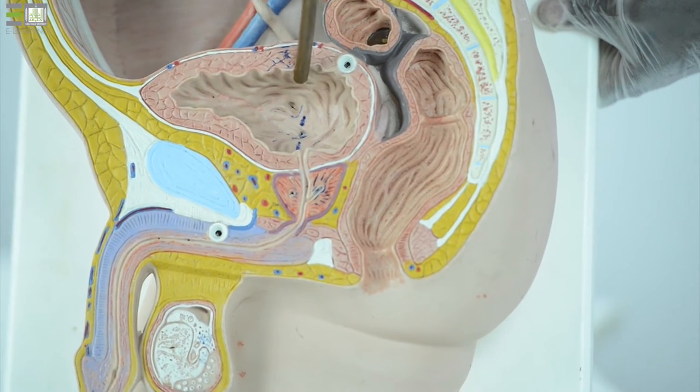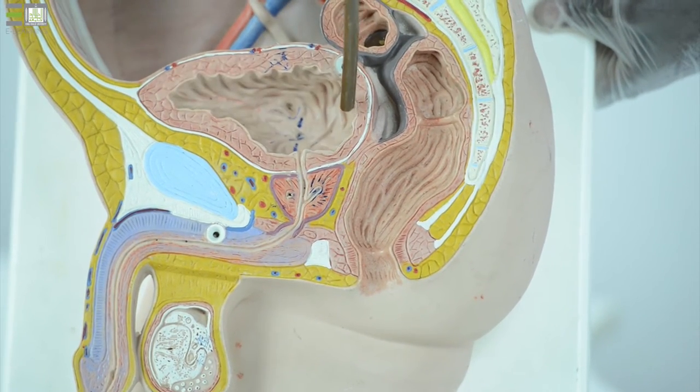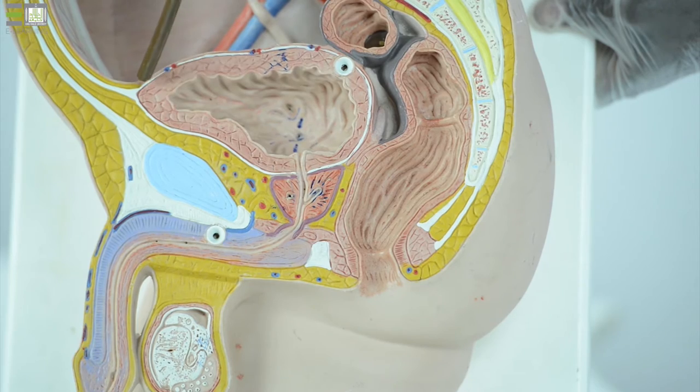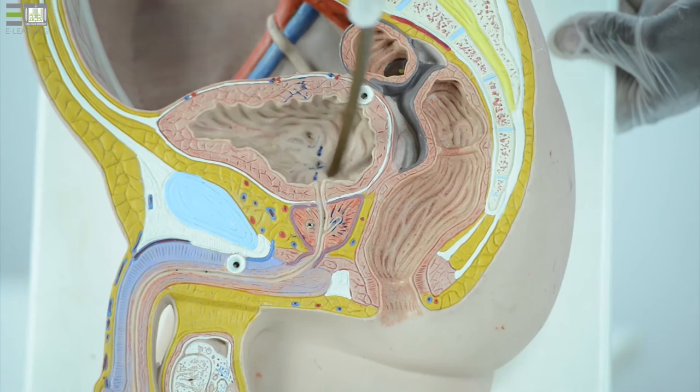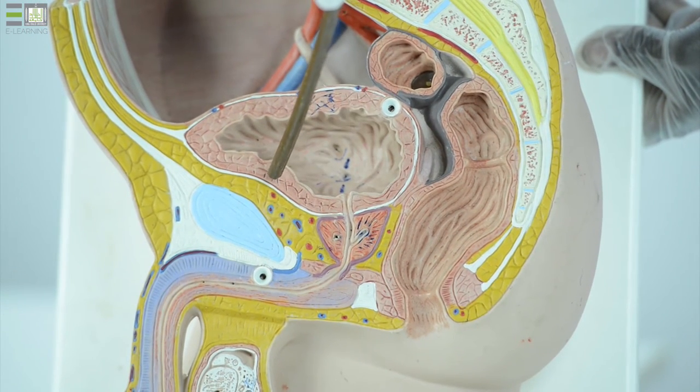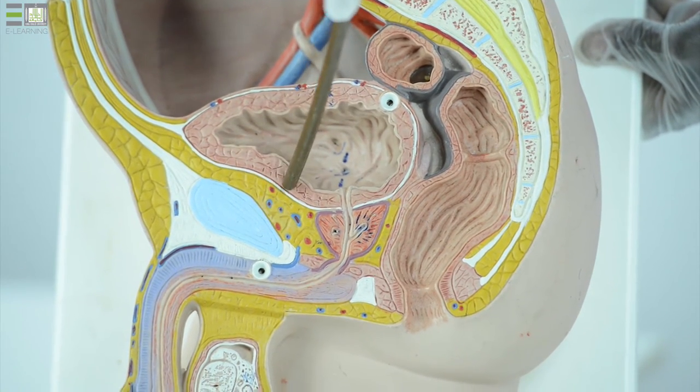Here appears the urinary bladder with base posteriorly, apex anteriorly, and superior surface. The interior of the urinary bladder appears here, the detrusor muscle within the wall.